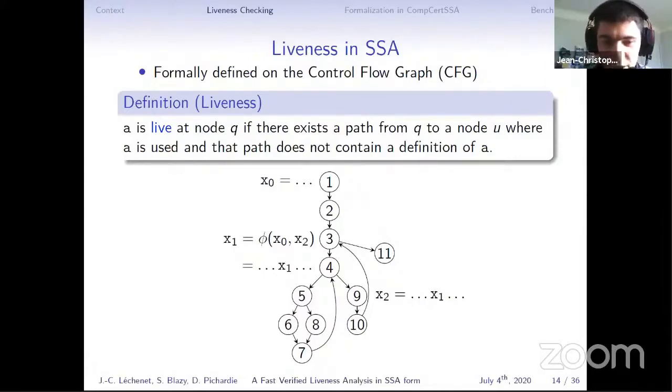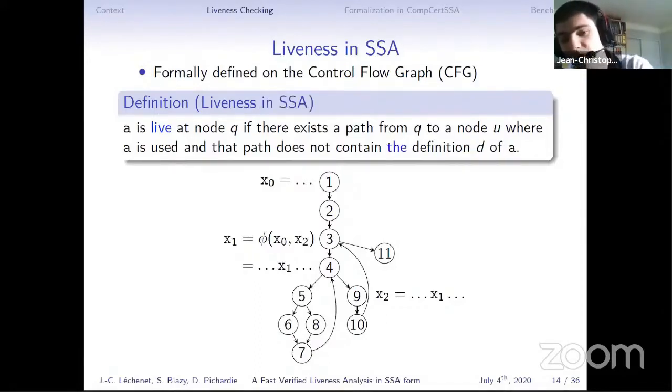So here, now our CFG is annotated with the SSA instructions. So we have three variables, x0, x1, x2, with a phi node in node 3. And if we apply the definition, as we are in SSA, we can be more precise. Instead of not contain a definition, we can say does not contain the definition because we know that there is only one. In this example, we can say that x1 is live at 5 since we have this path 5, 6, 7, 4. On the contrary, x2 is dead at 5 because we cannot reach a use of x2 without going through the assignment to x2 in 9.